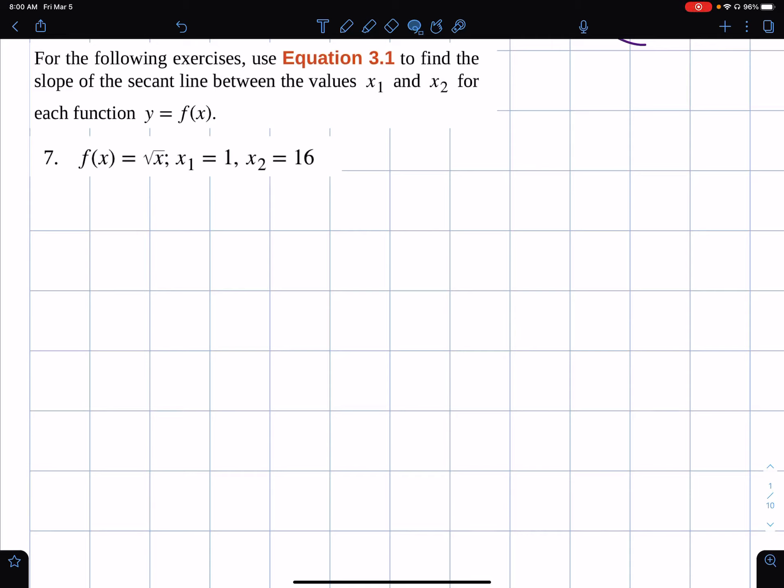In this problem, we find the slope of the secant line between the values x1 and x2 for the function.